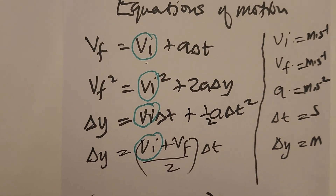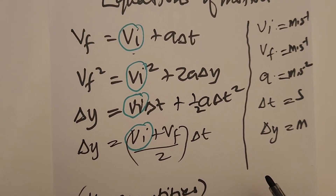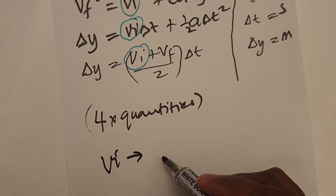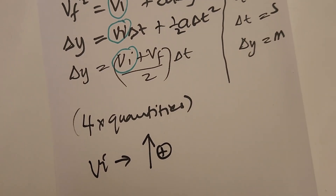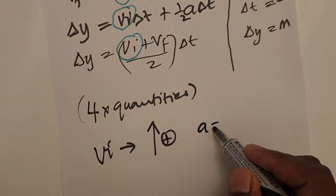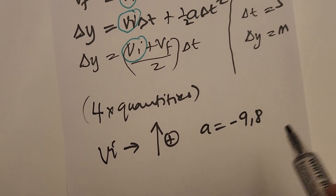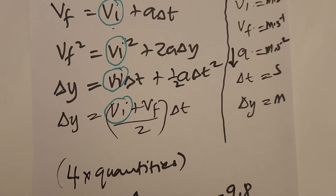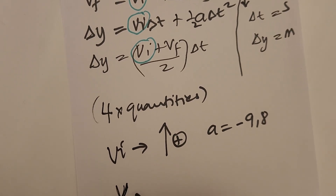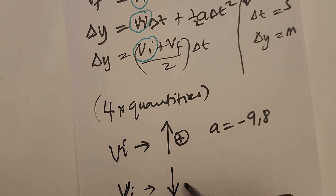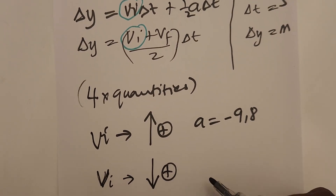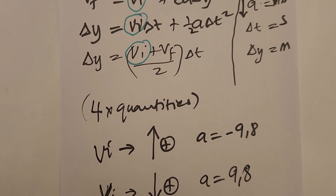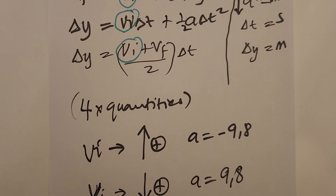The initial velocity vi also helps us determine the direction of motion. If the object starts by going up, take upward as positive — then acceleration a will be negative 9.8, because gravitational acceleration is always downward. If the object starts by going downward, take downward as positive and a will be positive 9.8. We will see the implementation of these equations in the next part.